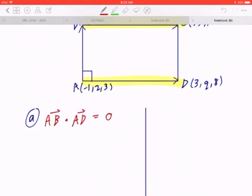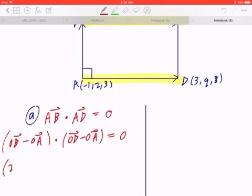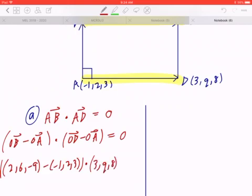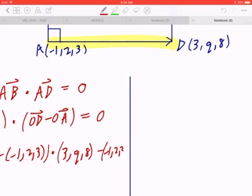So, if you start with the left-hand side, AB, by definition, is going to be OB minus OA. Let's put this in brackets. Dotted to, again, AD is going to be OD minus OA. And this equals 0. B is given to be (2, 6, -9). OA is going to be (-1, 2, 3). Let's put all this in brackets. Dotted into OD, which is (3, Q, 8) minus OA, which is (-1, 2, 3). Again, put that in brackets. This equals 0.